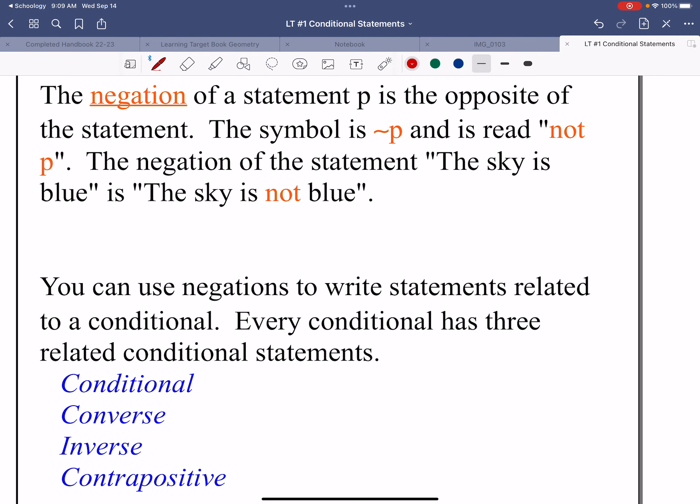The negation of a statement is the opposite of the statement. We use that little symbol. In fact, that symbol is also used for similar, but we say not P. The negation of a statement, the sky is blue, would be that the sky is not blue. So what we're going to do here is we're going to start off with a conditional, and we are going to rewrite that conditional many different ways. And that's what you're going to learn next.